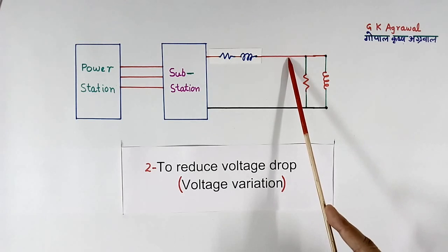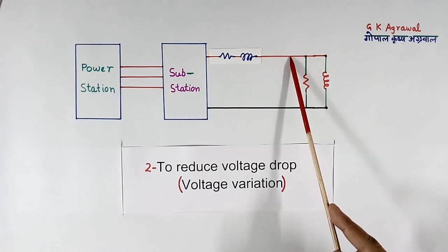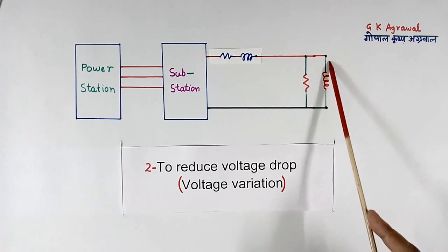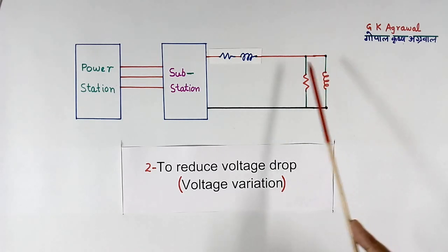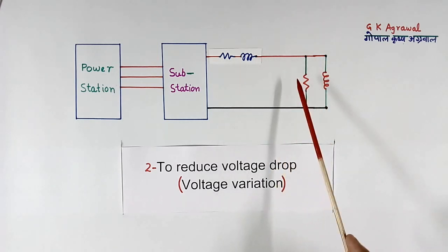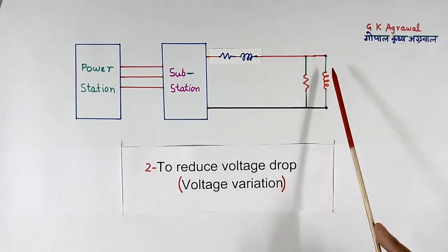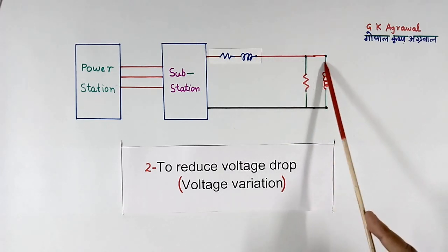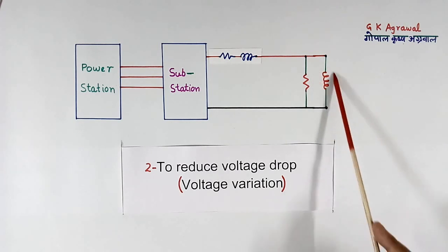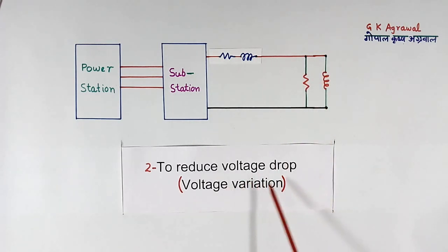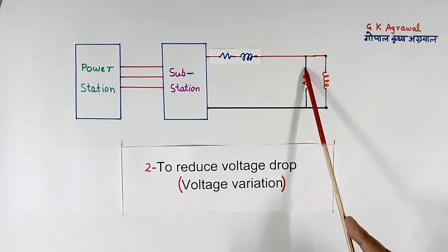Now what happens? Voltage drop due to reactive current is more here. Voltage drop due to resistive load is less here. Reactive current or inductive current creates more voltage drop or more voltage variation as compared to resistive load.